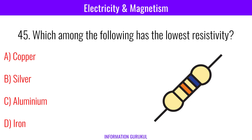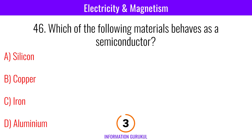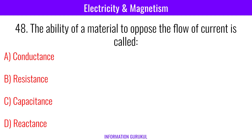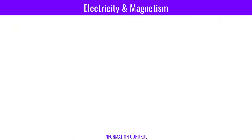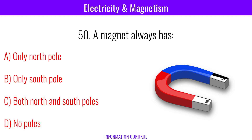Which among the following has the lowest resistivity? Silicon. Which device is used to step up or step down the voltage? Transformer. The ability of a material to oppose the flow of current is called resistance. What is the function of a fuse in an electric circuit? Prevent overcurrent. A magnet always has both north and south poles.